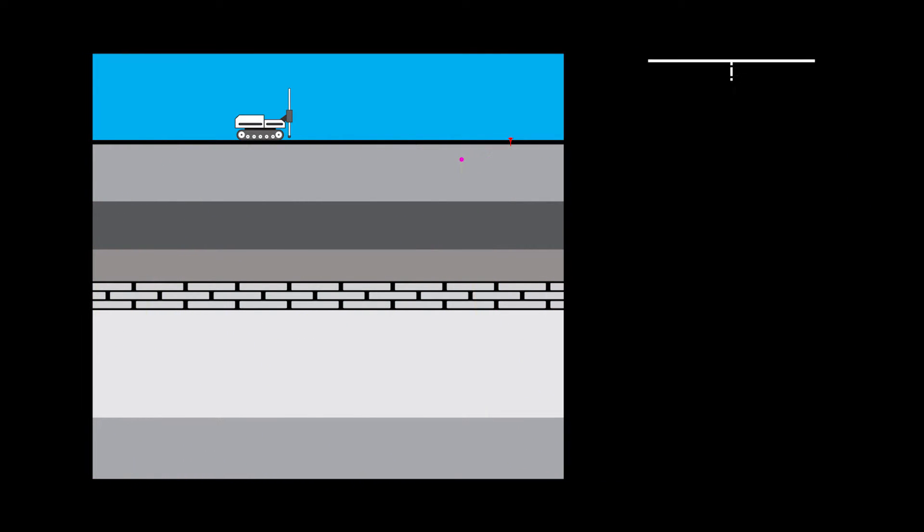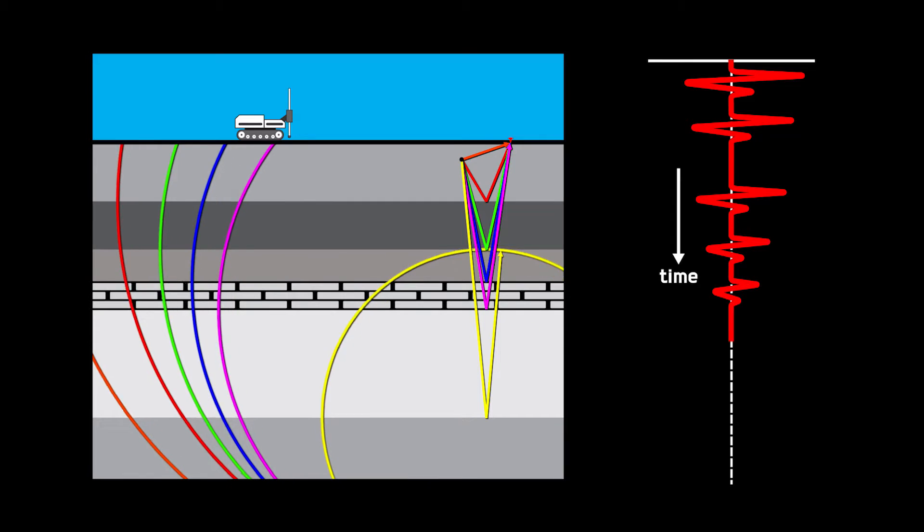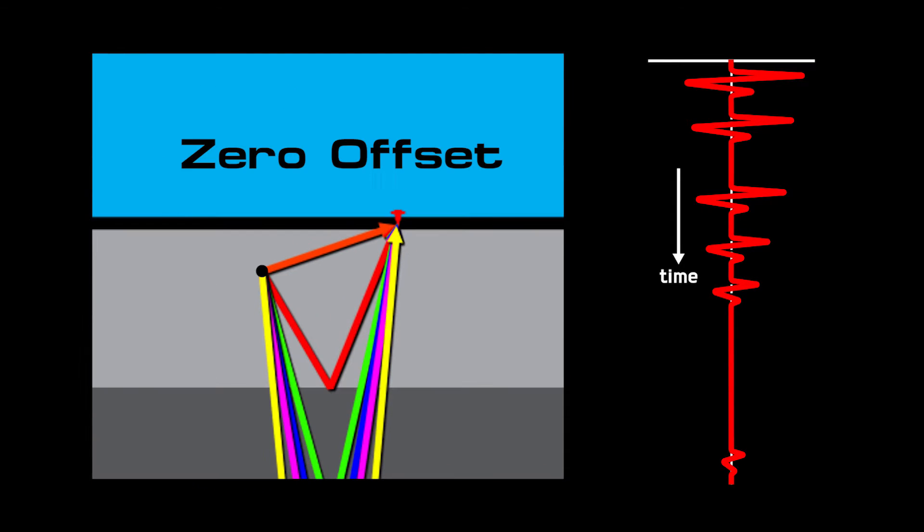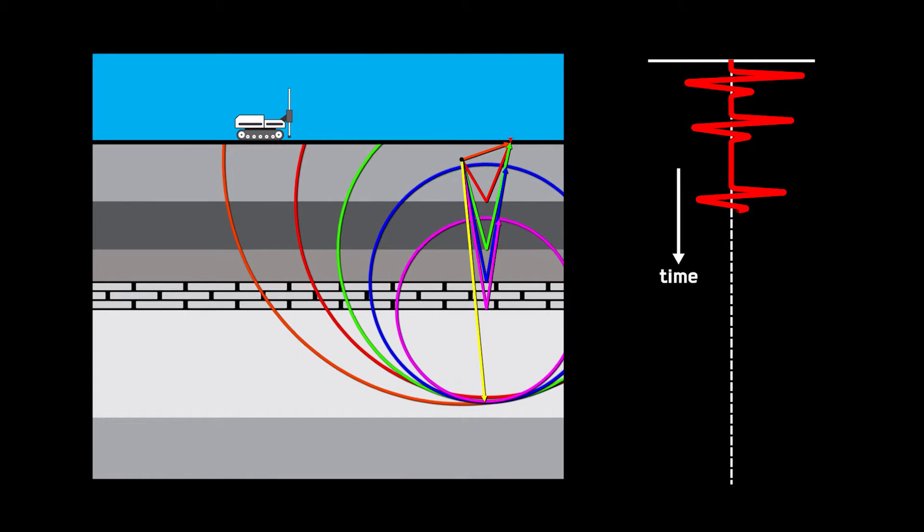With the geophone listening, we can observe the returning waves, in this case in real time. For this example, we are going to see there is zero offset between the geophone and the source. The resulting seismic trace has several basic features.